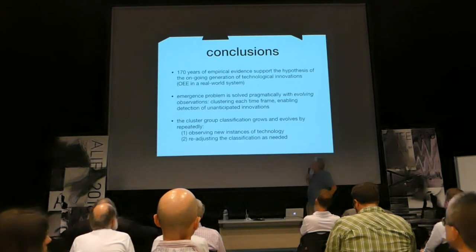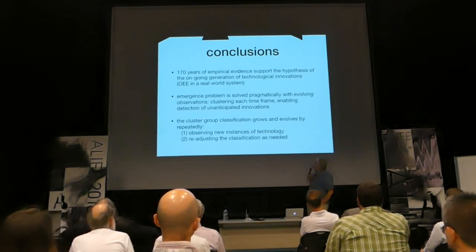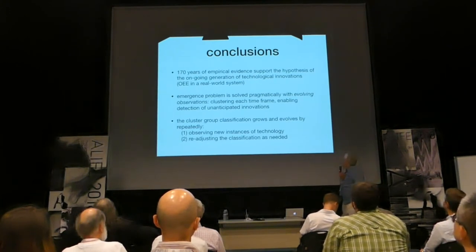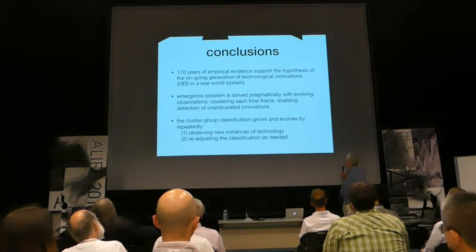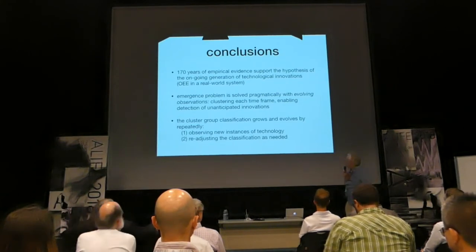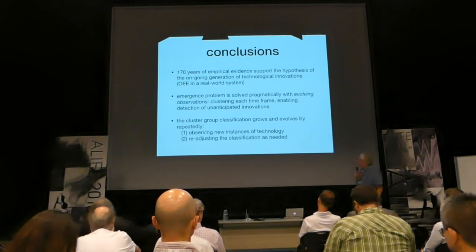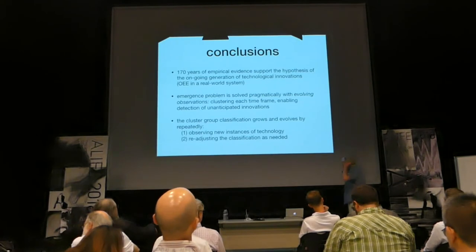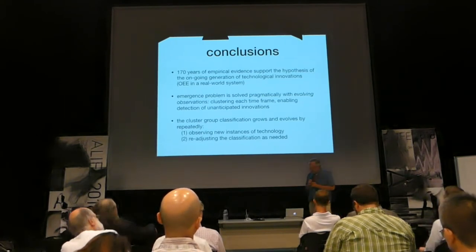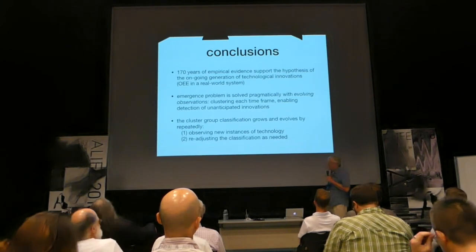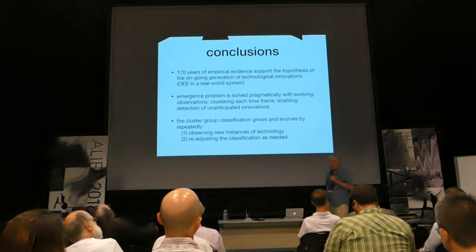That's basically the end. We've looked at all of this data. The USPTO data lasts back 170 years, and we have 39 years of the clustering data. We've tried to implement this pragmatic solution to the emergence problem by evolving our observations. We think it's pretty clear that according to either one of these analyses, US patents — or technology as represented by the patents — are in fact an example of open-endedness. And I think the same techniques can be used in principle for other empirical studies.